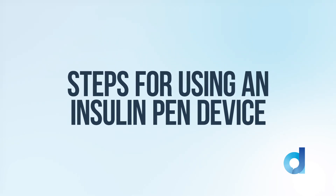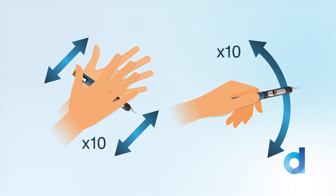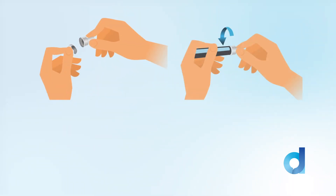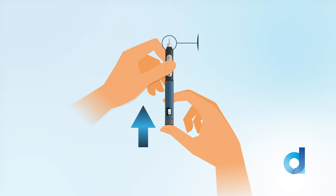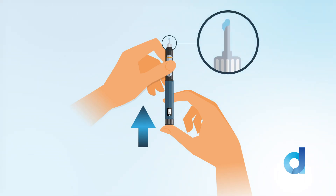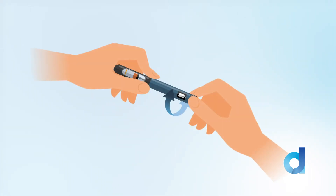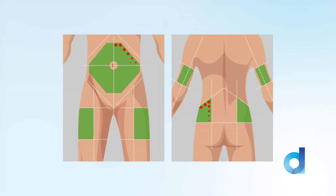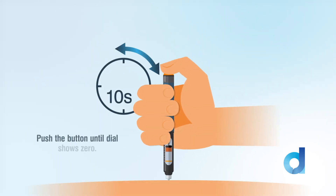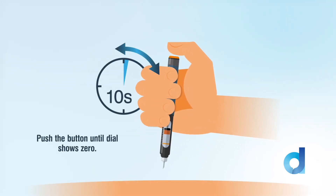Follow these steps when using an insulin pen device: 1. Gently mix cloudy insulins only. 2. Remove the cap and attach a new needle. 3. Prime with two units holding the pen upright. 4. Dial your dose. 5. Select an injection site. 6. Inject and hold for 10 seconds, pressing the button until the dial reaches zero. 7. Dispose of needle safely.